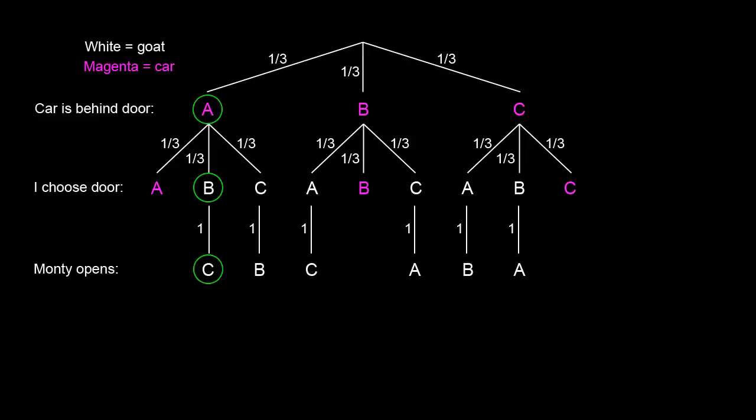Now let's fill in the cases where I pick the car. Now Monty has two goats he can show me, and he can show me either one with equal probability. For example, the car is behind door A. I choose door A. Then Monty can show me either door B with probability one-half, or door C with probability one-half.